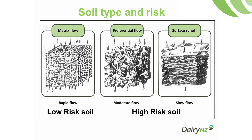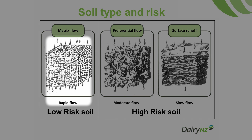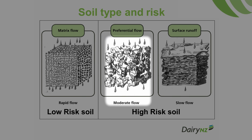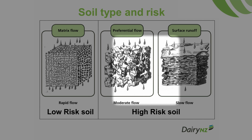Commonly, the reason for this is that low-risk soils display matrix flow, where the effluent percolates down through the profile in an even manner, exploring the entire soil matrix. However, high-risk soils display a high risk of preferential flow paths down the soil profile, as well as a high risk to surface runoff.